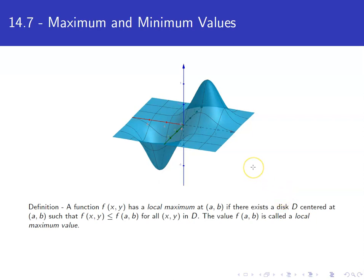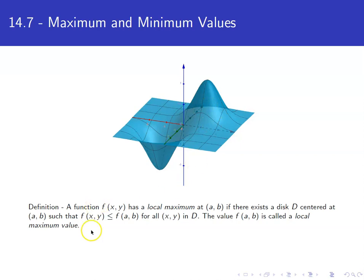We say that a function f(x, y) has a local maximum if there is some disk centered at (a, b) — here would be the point f(a, b) up here, with (a, b) being down in the x, y plane. If we plug anything in that disk into the function, the function value has to be no bigger than the value we're calling the maximum. This idea of a disk restricts to an area where we really do have the top of a hill. The function value at that point is what we call the local maximum value.